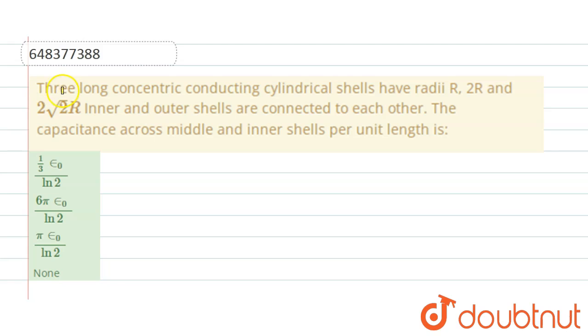Hello students, here the question is: three long concentric conducting cylindrical shells have radii r, 2r and 2√2r. Inner and outer shells are connected to each other. The capacitance across the middle and inner shells per unit length is what?